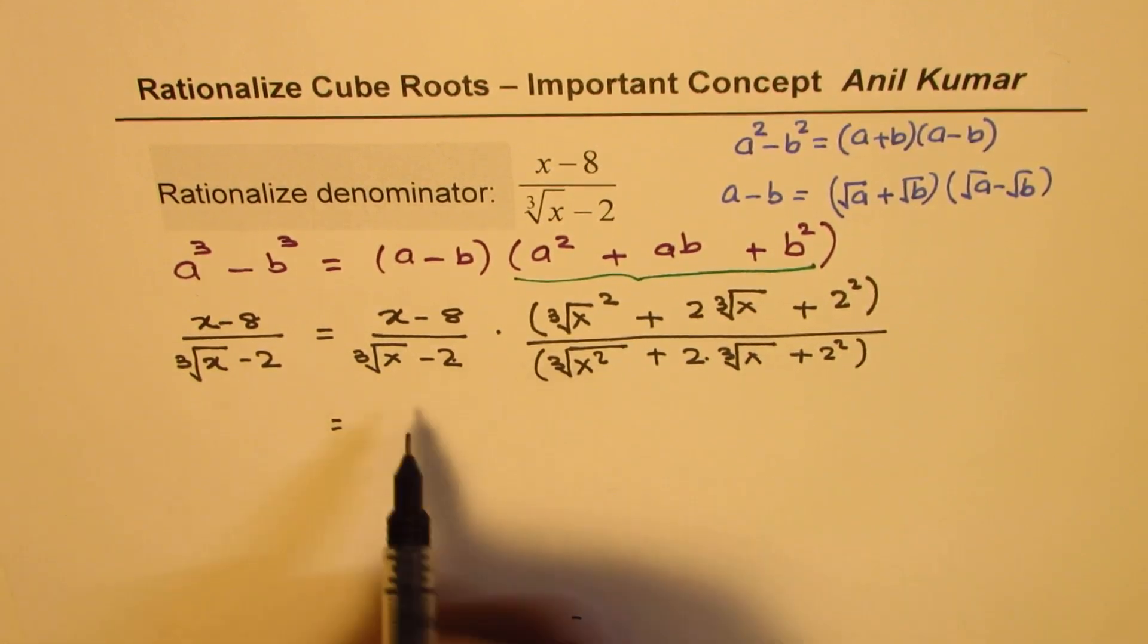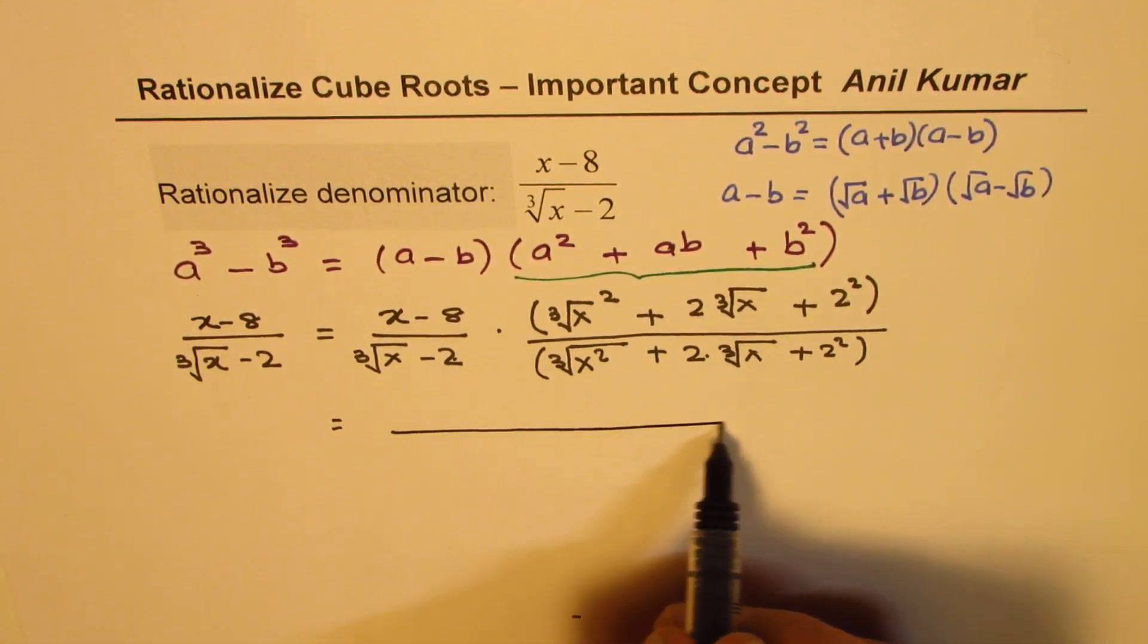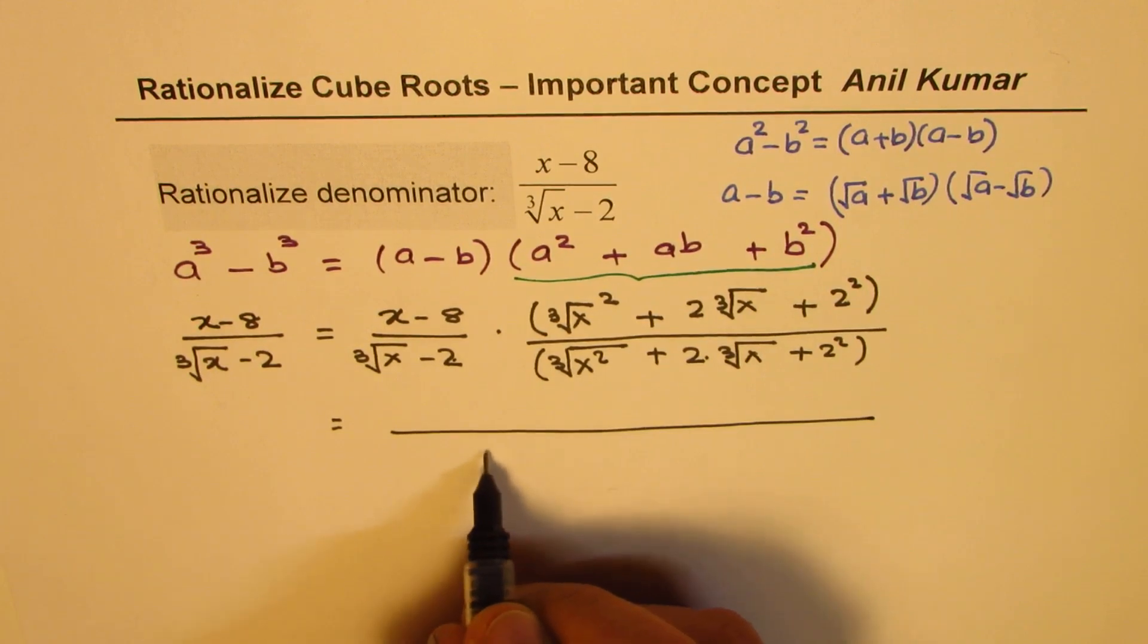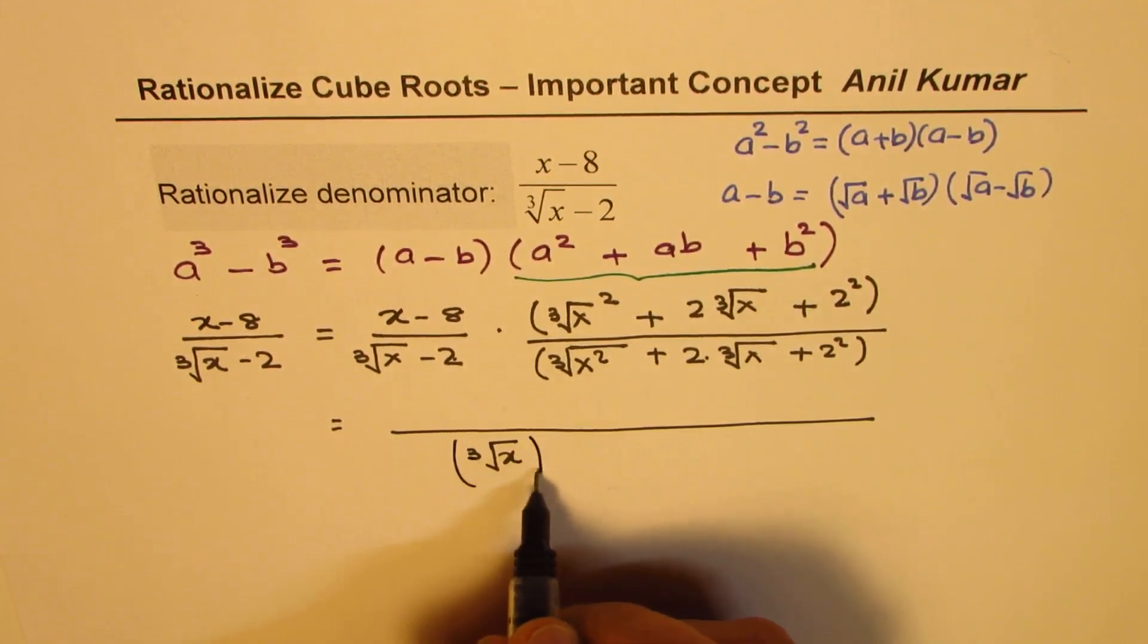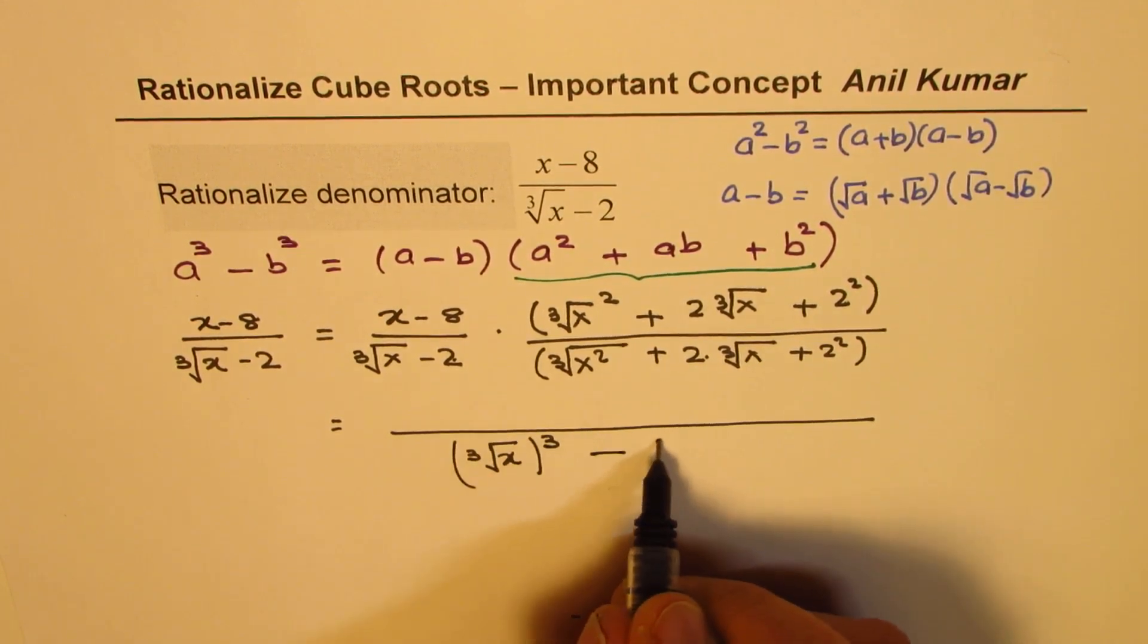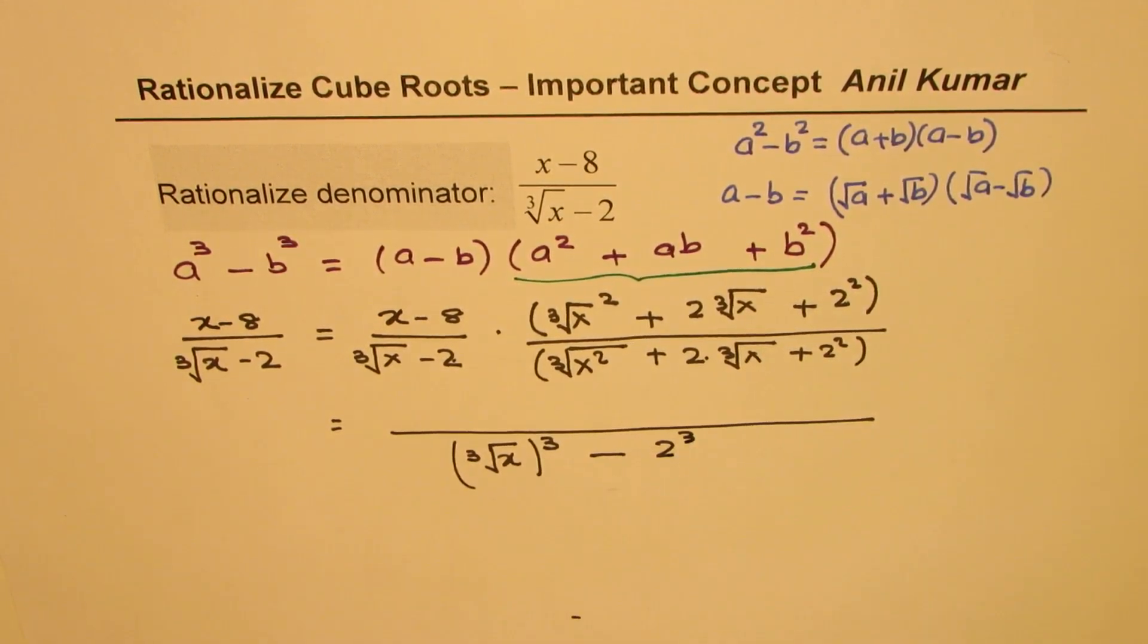So, in the denominator, what you get is cube of this cube root, minus cube of 2. So, that is what you get in the denominator. Perfect. So, you see, we have got rid of the radical from the denominator.